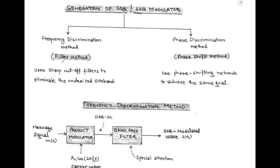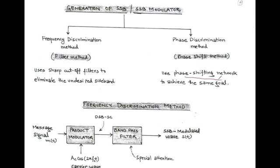In the filter method, we use a filter having sharp cutoff frequencies. With the help of this filter, we can eliminate the undesired sideband, whether it is the upper sideband or lower sideband. In the case of the phase discrimination method, we use a phase shifting network to achieve the same goal — eliminating the undesired sideband, whether upper or lower.